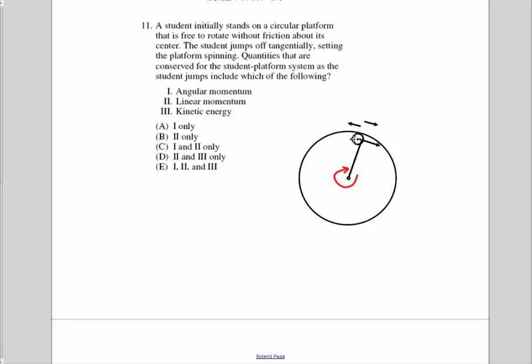If the boy comes off like this, and we treat this as one system because it said the student platform system. If we treat all this as one system, then the angular momentum will be held, meaning that the angular momentum here, as the boy jumps off, will decrease. But the angular momentum of the boy in respect to the center will also increase. But the change will be the same, so there will be no change in angular momentum.